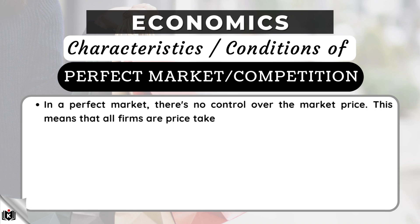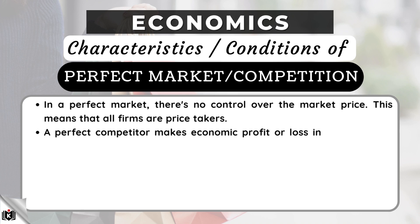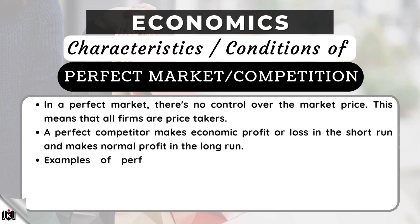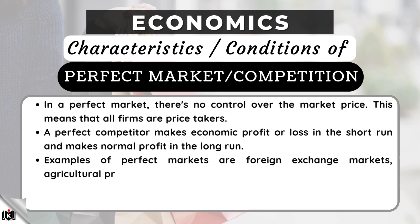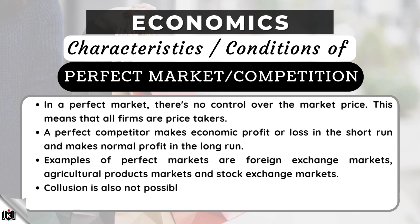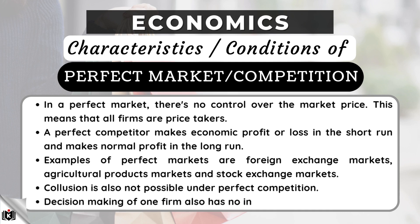All firms are price takers. A perfect competitor makes economic profit or loss in the short run, and makes normal profit in the long run. Examples of perfect markets are foreign exchange markets, agricultural products markets, and stock exchange markets. Collusion is also not possible under perfect competition. Decision-making of one firm also has no influence on other firms.